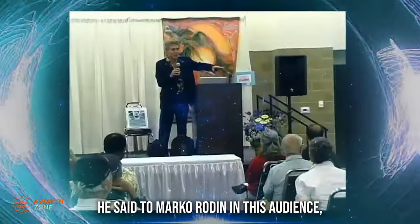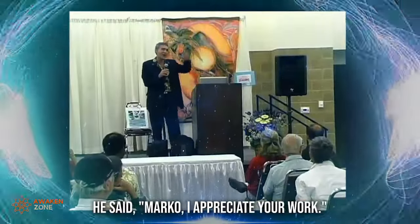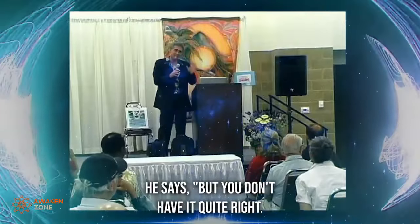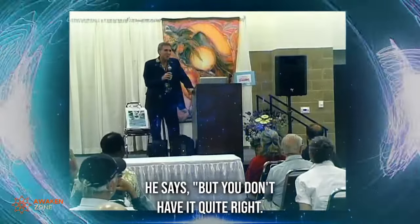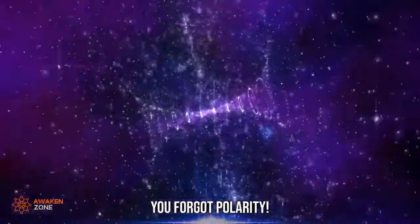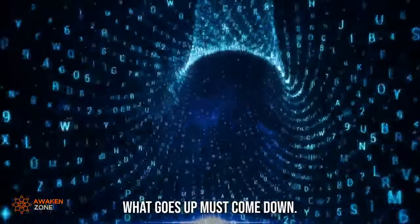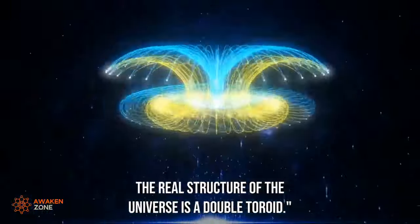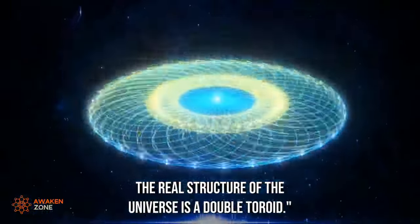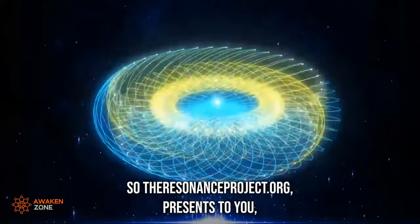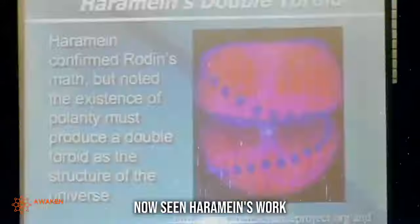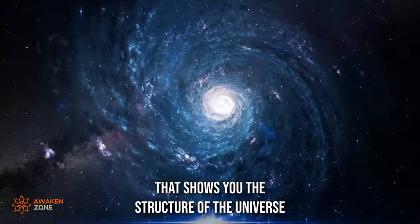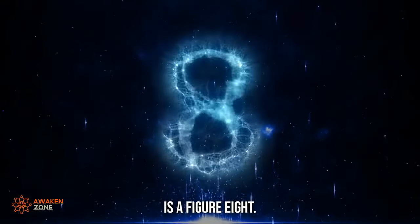He's a metaphysical physicist who took Einstein's field equations and factored in torque, spin, and velocity, and advanced Einstein's work dramatically to come up with his structure of the universe. He said to Marko Rodin in this audience: I appreciate your work, but you don't have it quite right. You forgot polarity. What goes up must come down. There's a positive, there's a negative. It's not a single toroid. The real structure of the universe is a double toroid.